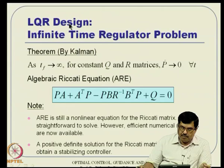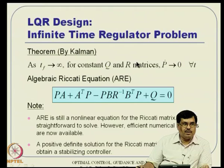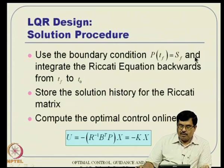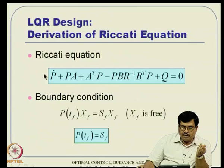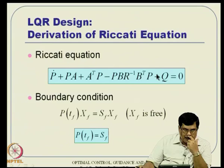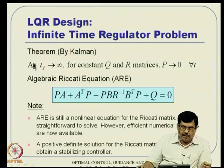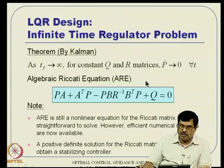A great theorem by Kalman simplifies life considerably. When T_f → ∞ and Q and R are constant matrices, P_dot goes to zero for all time — meaning P becomes a constant matrix. If P is constant, P_dot = 0, and the differential Riccati equation becomes an algebraic equation. This is what is very popular in industry. That is why when nobody specifies T_f, we assume T_f → ∞ — allowing us to use this constant-gain solution indefinitely.